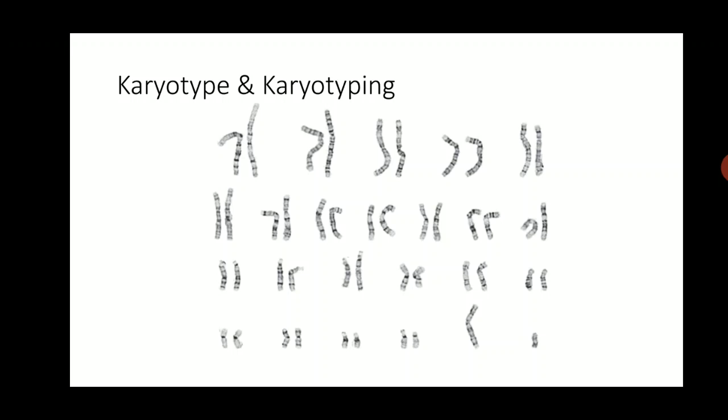Based on the size, the location of the centromere, and the number of bands on a given chromosome, the chromosomes can be identified as 1, 2, 3, or others. You can also note that the Y chromosome, the last chromosome in the picture, is very small compared to the X chromosome.